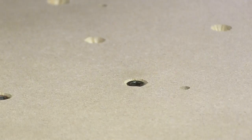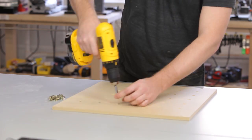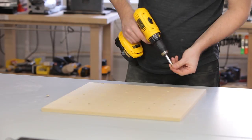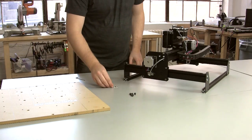See how the head of the threaded insert goes below the waste board there. Repeat this for all the holes you just countersunk.